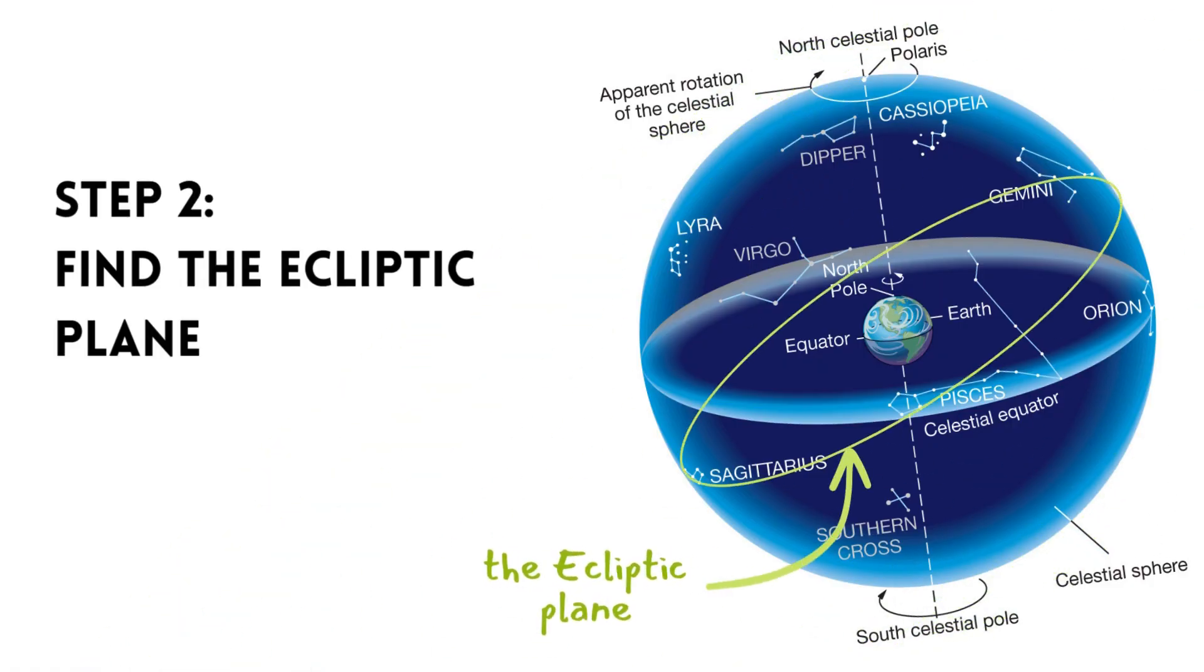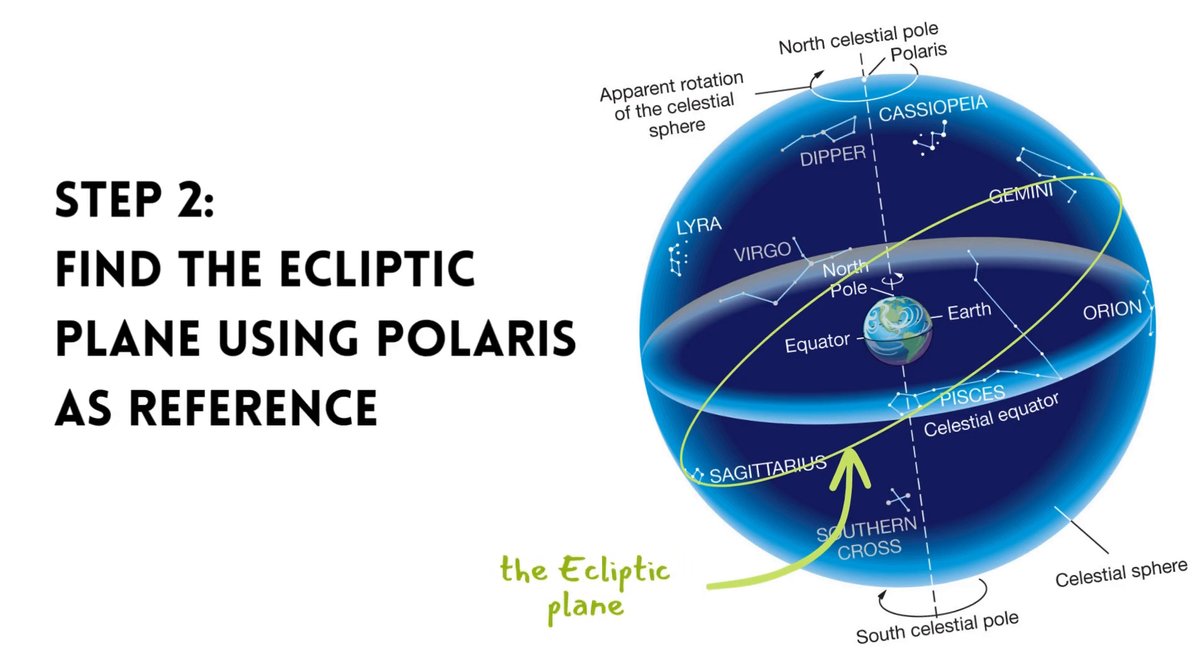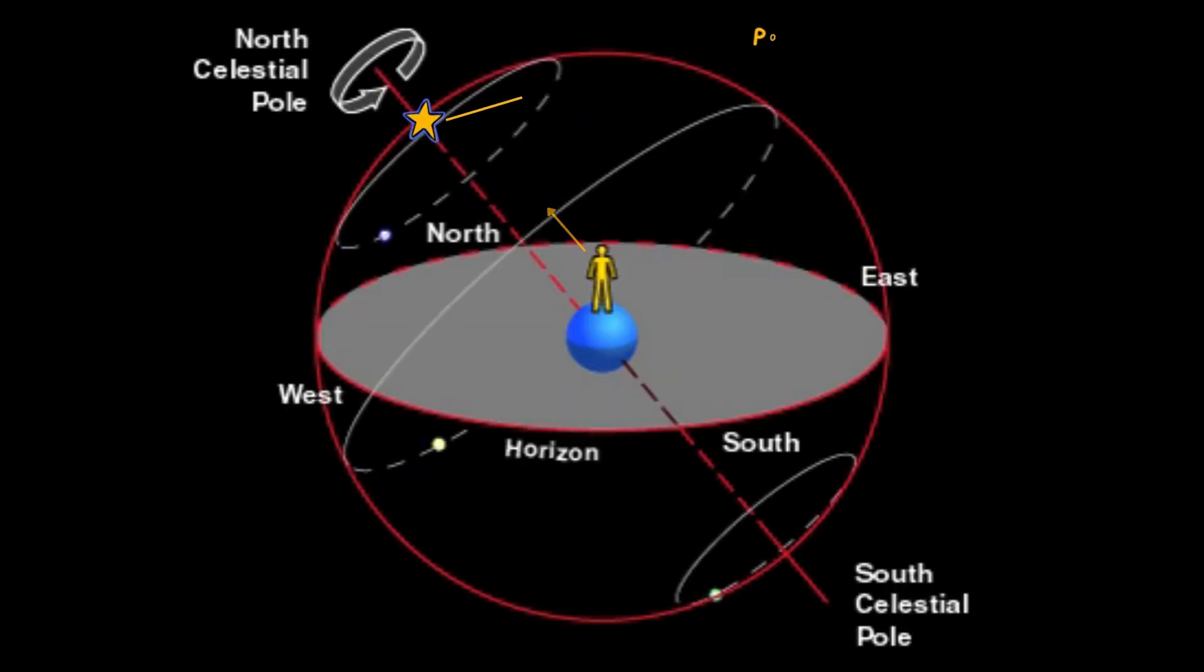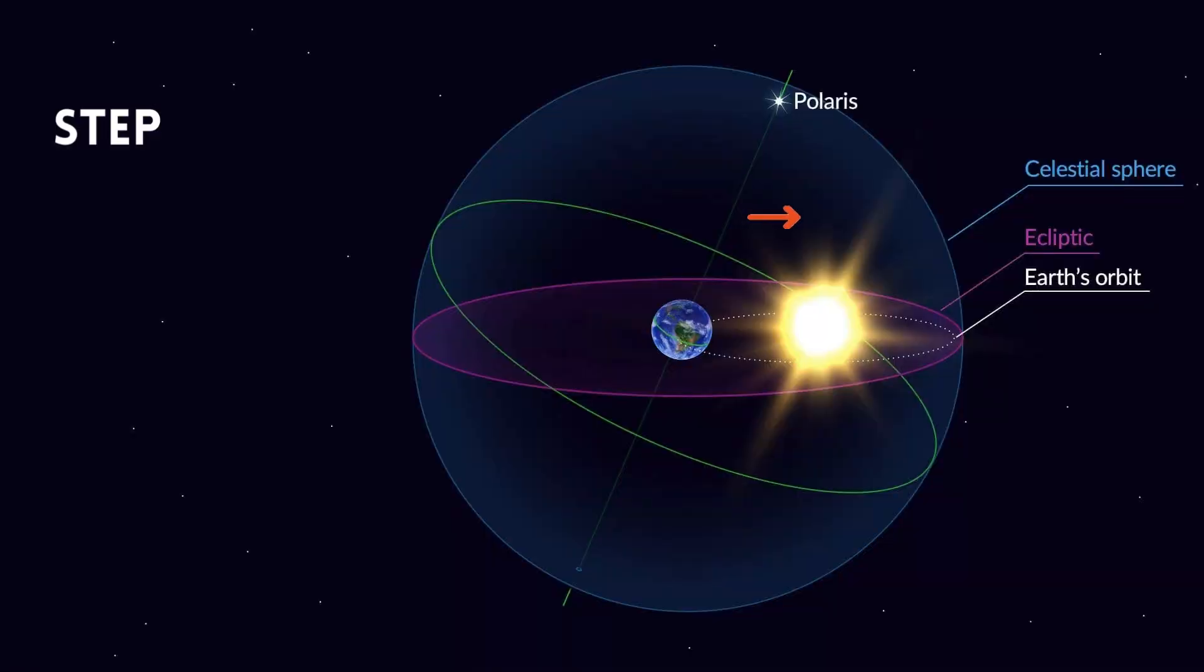Remember, the ecliptic plane doesn't lie perfectly north-south but tilts at an angle of 23.5 degrees. To locate the ecliptic plane, face Polaris and consider it as your North. Now move slightly eastward or westward from Polaris.